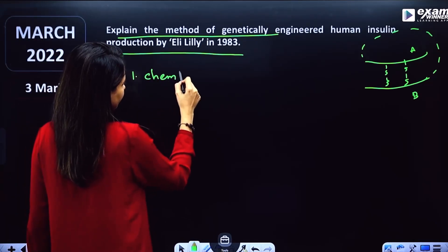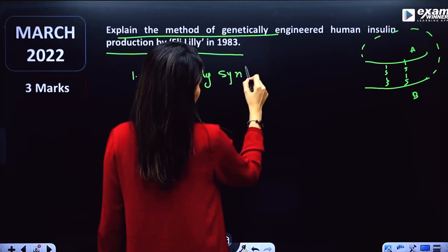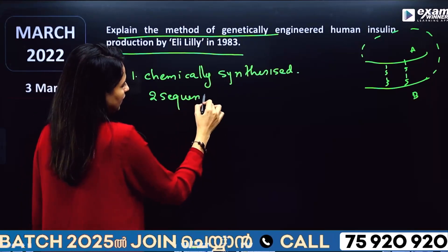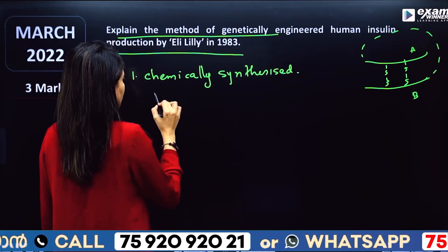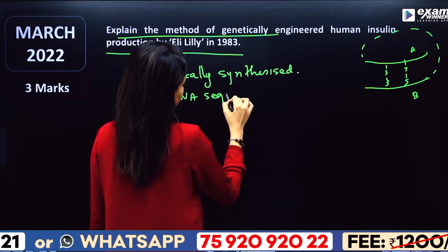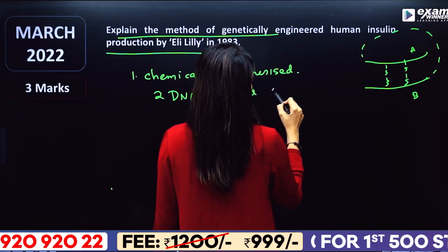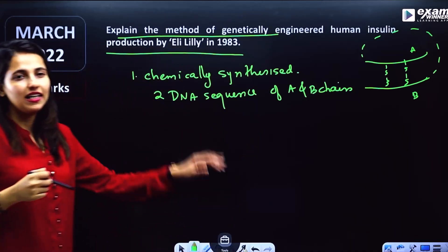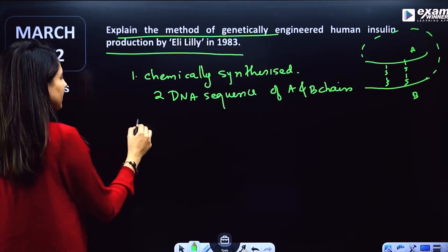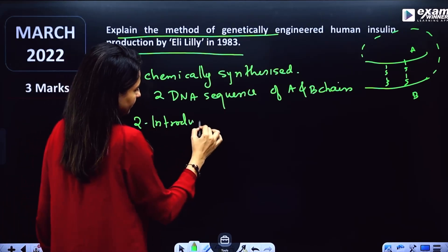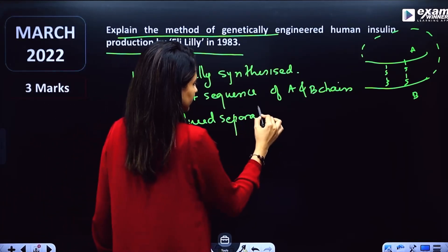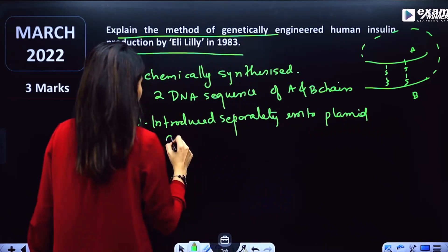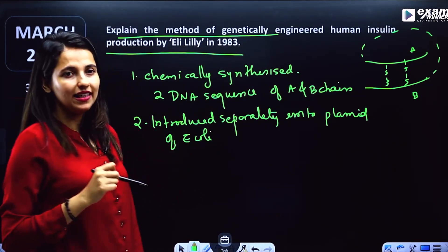Two DNA sequences of A and B chains are chemically synthesized. The DNA sequences for the A chain and B chain are synthesized separately and introduced separately into the plasmid of E. coli.